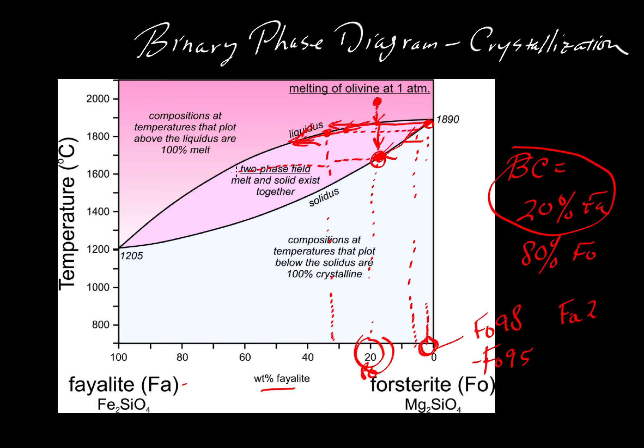Well we'll do our best to draw a horizontal line. Looks like the last little bit of liquid would be somewhere in the vicinity of fayalite 70, so FA 70 or FO 30. Those are equivalent. So we started out with a bulk composition that was FO 80 or fayalite 20. Those are equal to one another.